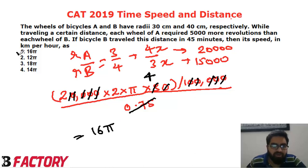So the speed of B or A will be 16 pi kilometers per hour. Sorry, 16π kilometers per hour.